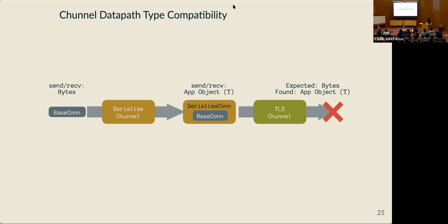How can we compose different channels together? The answer turns out to be a little more complicated, because each channel can have its own data path interface unique to that channel. For example, if we want to take a serialization connection with an object interface and pass it into a TLS channel expecting bytes, this won't work because of type restrictions the TLS channel developer specified. Instead, the application developer could compose the TLS channel with a connection type that matches its interface — like the base connection — and then take that connection and pass it into the serialization channel. Once the channel stack compiles, the application developer knows the data path types are compatible.